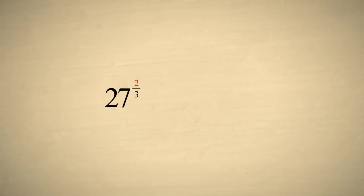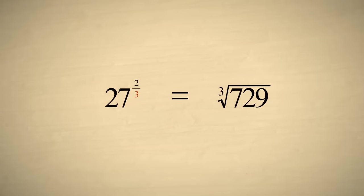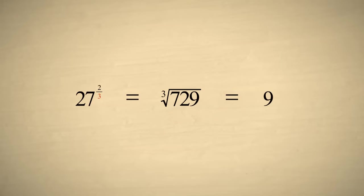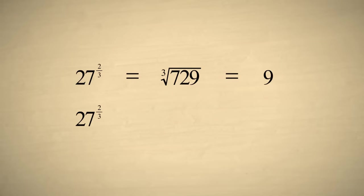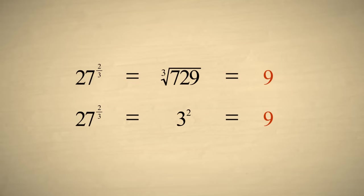If we square twenty-seven first, we get seven hundred twenty-nine. Then taking the cube root of seven hundred twenty-nine gives us nine. On the other hand, if we take the cube root first, we get three. And squaring three gives us nine. Either way, we get nine. However, the second way is a lot easier.